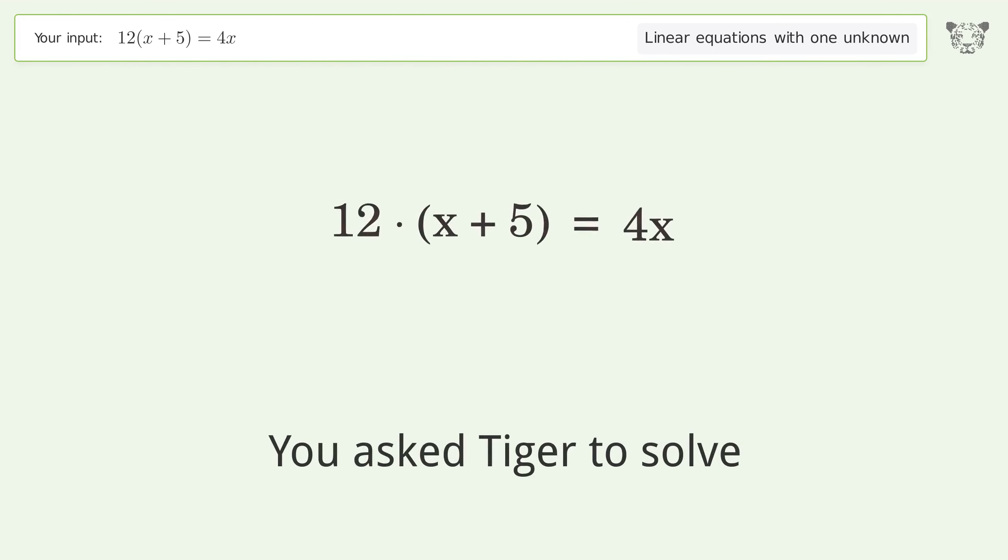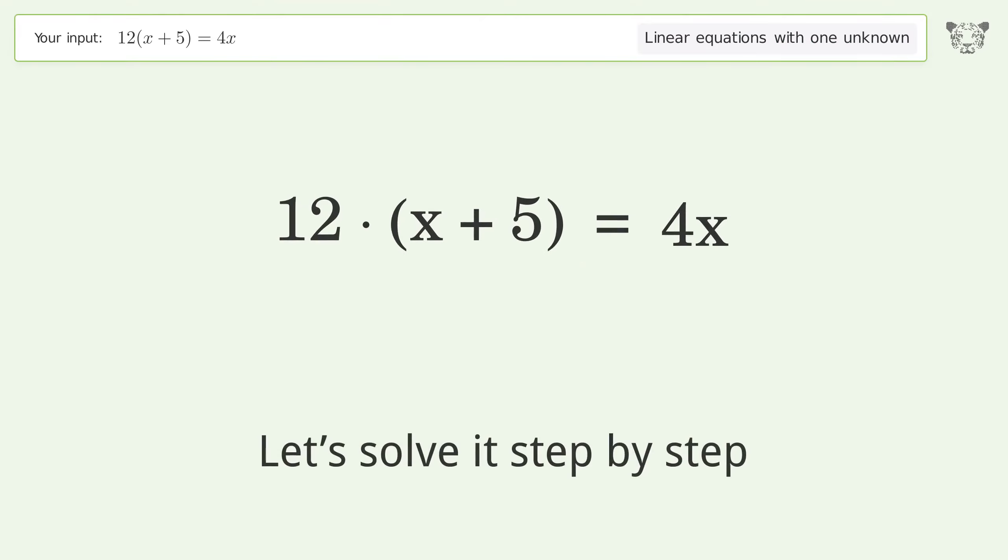You asked Tiger to solve this. It deals with linear equations with one unknown. The final result is x equals negative 15 over 2. Let's solve it step by step.